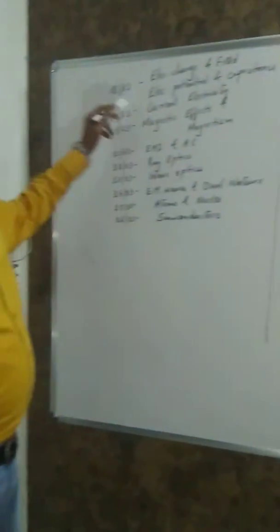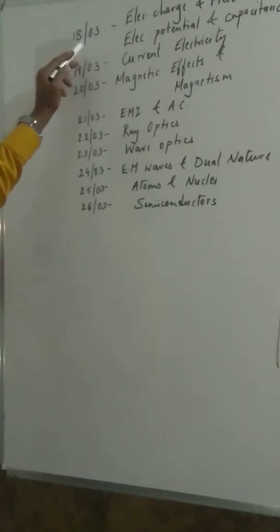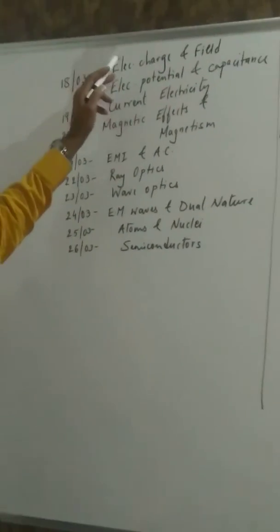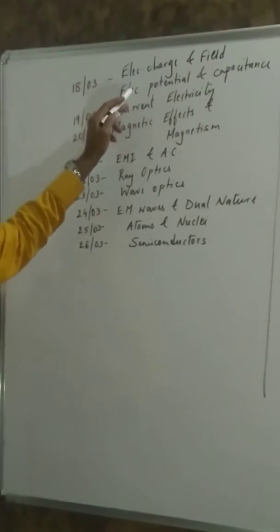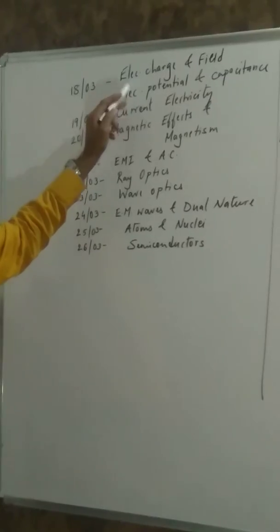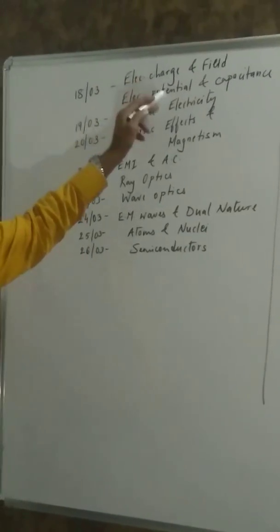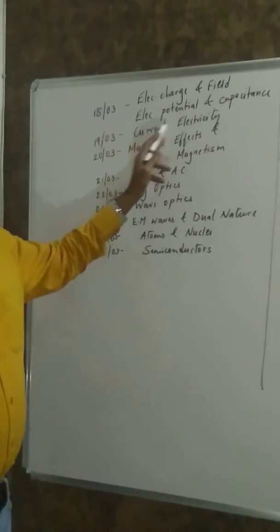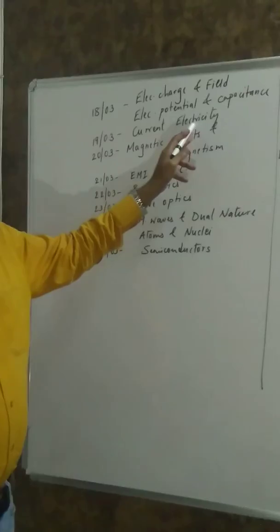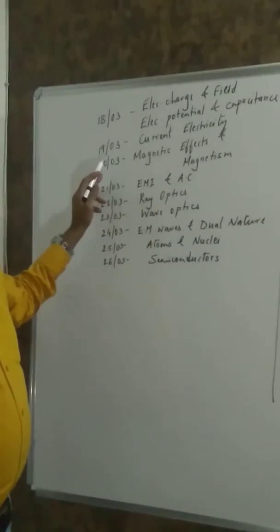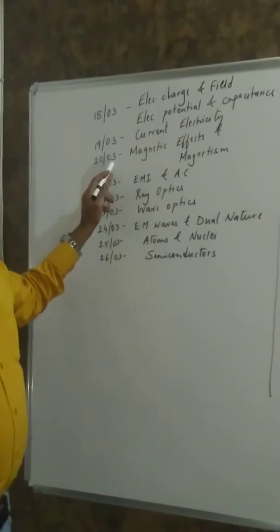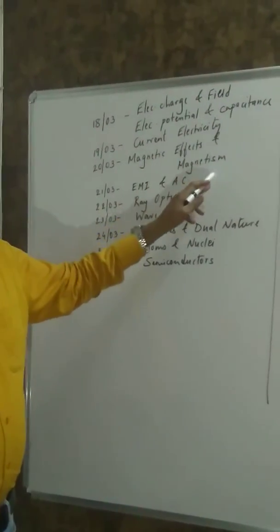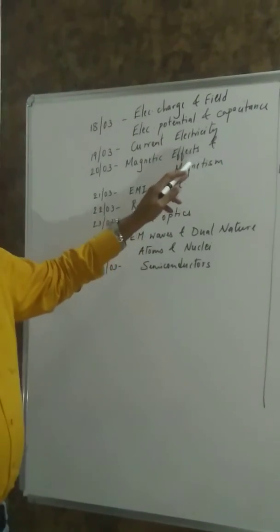So if you might have a look here, today that's 18th March, I have already uploaded electric charge and field and electric potential and capacitance, that's chapter 1 and 2. Tomorrow we will be looking at current electricity, that's chapter 3. On 20th March, we will be looking at magnetic effects, chapter 4, and magnetism, that's chapter 5.